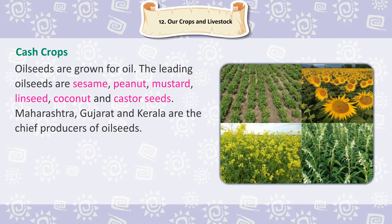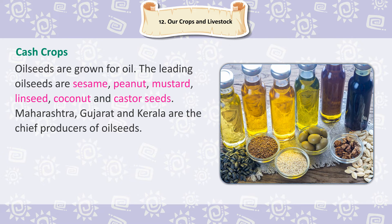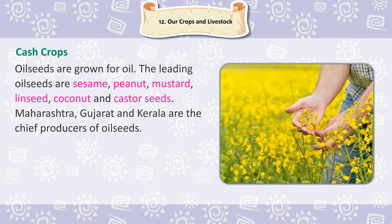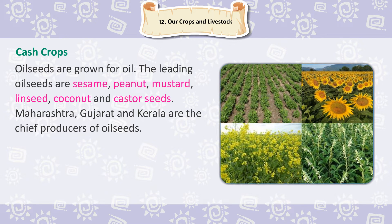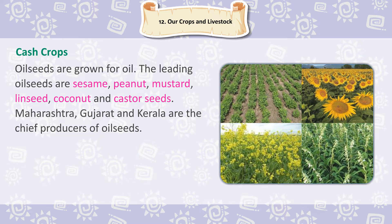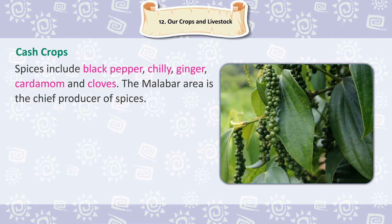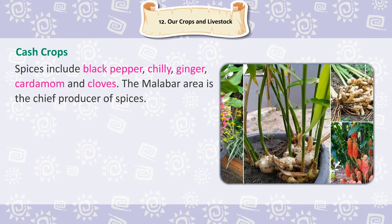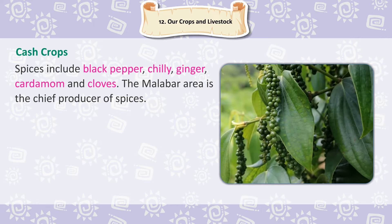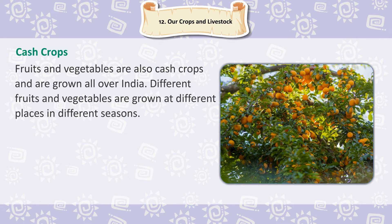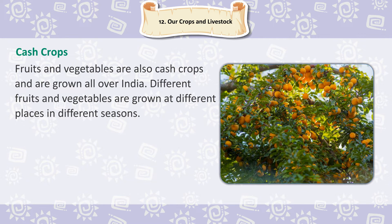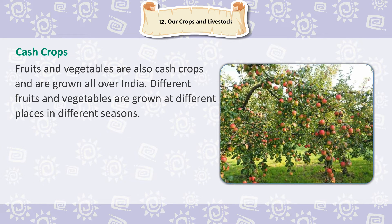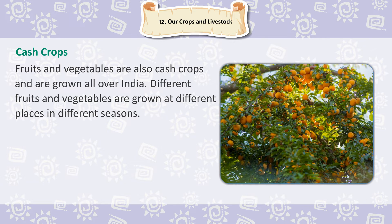Oil seeds are grown for oil. The leading oil seeds are sesame, peanut, mustard, linseed, coconut and castor seeds. Maharashtra, Gujarat and Kerala are the chief producers of oil seeds. Spices include black pepper, chilli, ginger, cardamom and cloves. The Malabar area is the chief producer of spices. Fruits and vegetables are also cash crops and are grown all over India in different seasons.